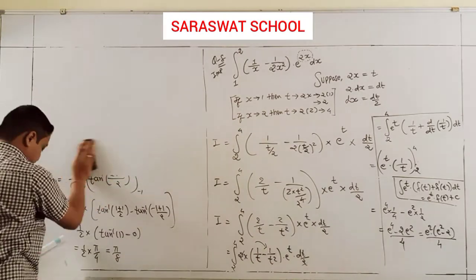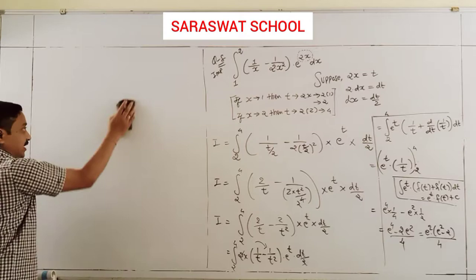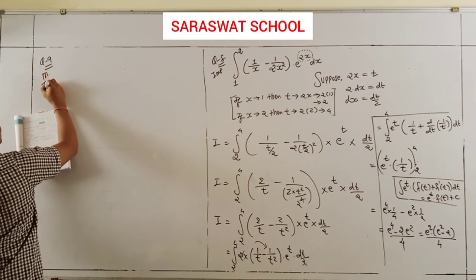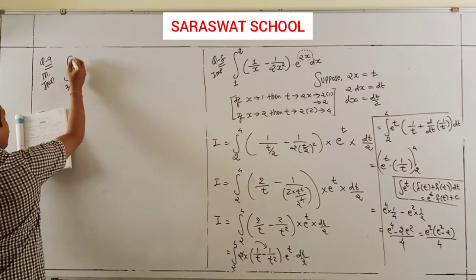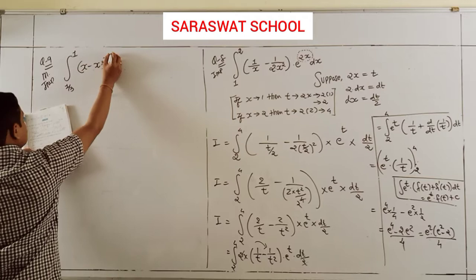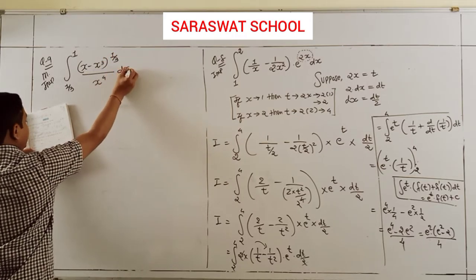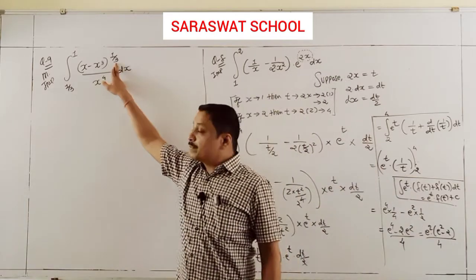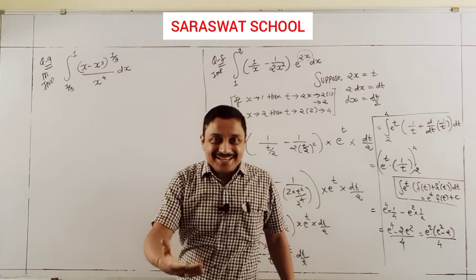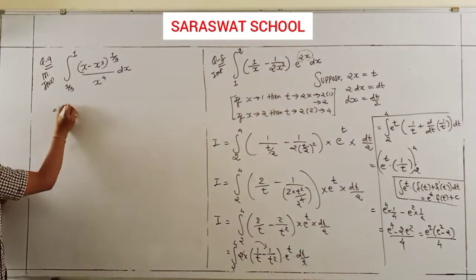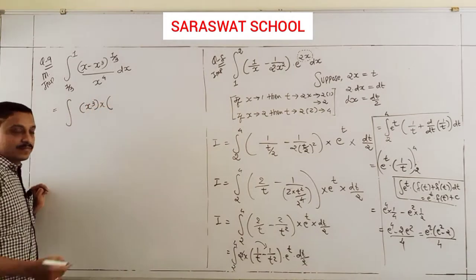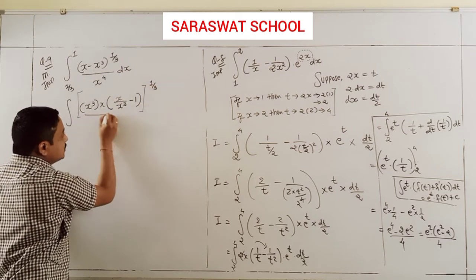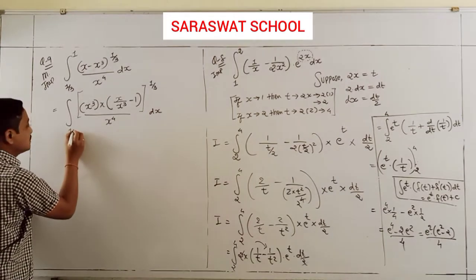Question 9 is also very very most important. Integrate from 1/3 to 1 of (x - x³)^(1/3) divided by x⁴ dx. This numerical is not easy — it's also dangerous. The power is 1/3, so I rearrange in terms of x³. Taking x³ outside: x³(1/x² - 1) = x³(x⁻² - 1), raised to 1/3.